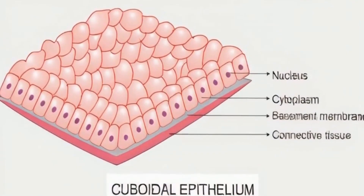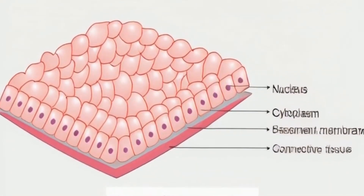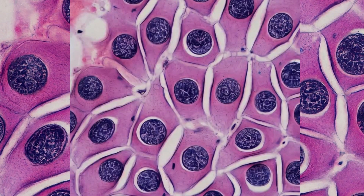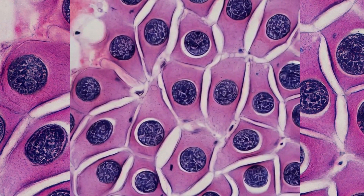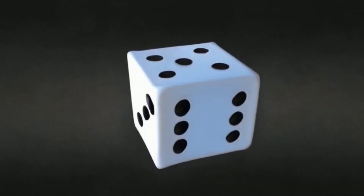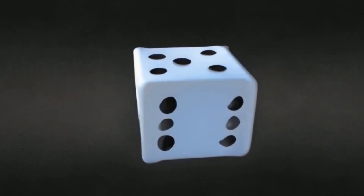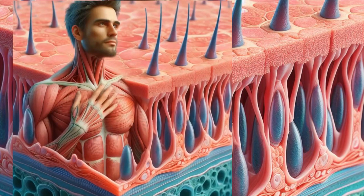Cuboidal epithelium, as the name suggests, consists of cells shaped somewhat like cubes. Picture a six-sided die from your favorite board game — that's roughly the shape we're talking about.